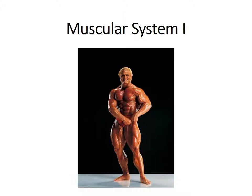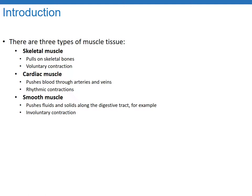This is Lecture 15 on the Skeletal Muscular System, Muscle System 1. There are three types of muscle tissue: skeletal muscle, cardiac muscle, and smooth muscle.